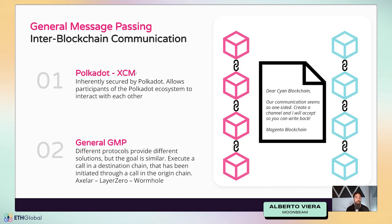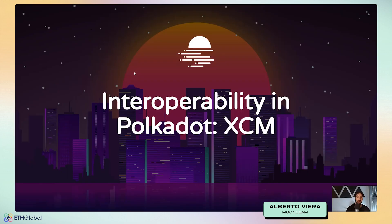We also have general GMP protocols — different protocols with similar goals: to execute a call in a destination chain that has been initiated through a call in the origin chain. Current integrations on Moonbeam include Axelar, Layer Zero, Wormhole, and others. Today we'll focus on interoperability in Polkadot and XCM, but if you want to learn more about GMP protocols, I recommend visiting their documentation pages and applying their tutorials to Moonbeam or Moonbase Alpha testing.